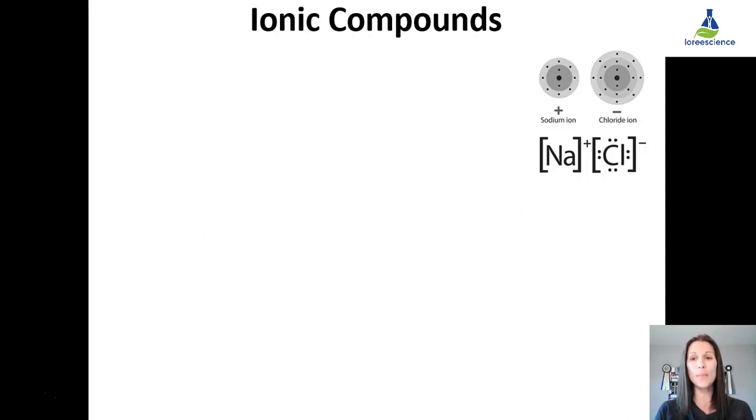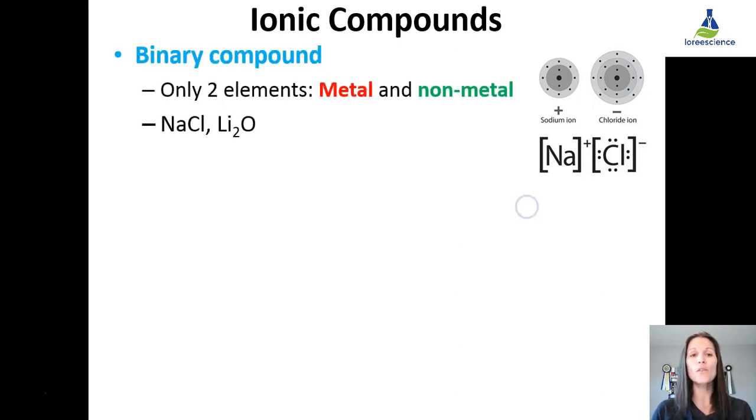Ionic compounds. We have two major types of ionic compounds. The first type are called binary compounds. Bi implies two, and binary compounds is when there are only two elements present, a metal and a non-metal. For example, sodium chloride or lithium oxide. You have one single cation and one single anion.